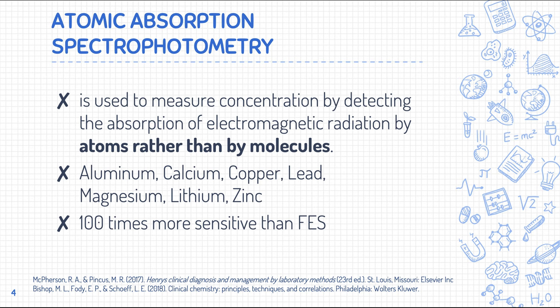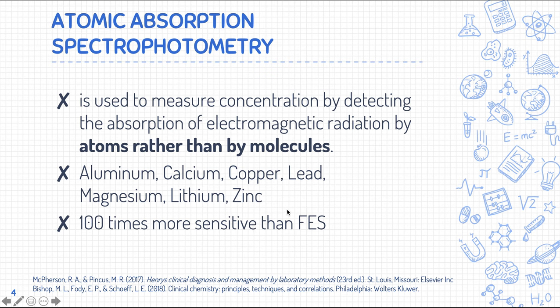Since we are talking about atoms, the usual things we measure using AAS are elements — typically aluminum, calcium, copper, lead, magnesium, lithium, and zinc. As you can see, most of these are part of your electrolytes, some are trace elements, and some are heavy metals or toxic elements seen in patients — for example, lead in cases of lead poisoning or plumbism.